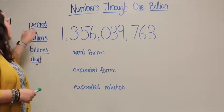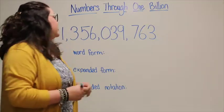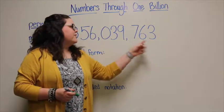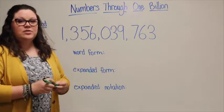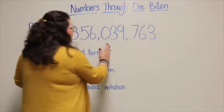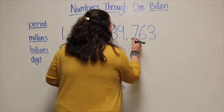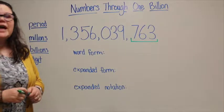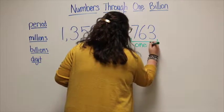Our first vocabulary word is period. A period is a group of three digits. Looking at our example number, we can see that our first period is right here — my first three digits, separated by a comma. When working with numbers, place value always starts from the right and you work your way to the left to get to greater place values. This is my ones period.